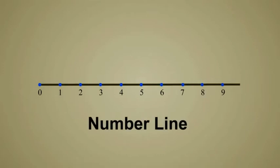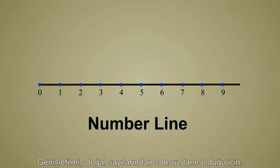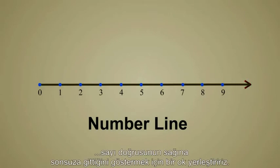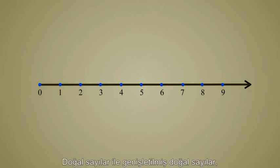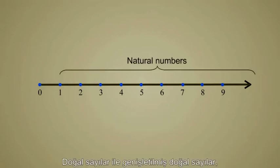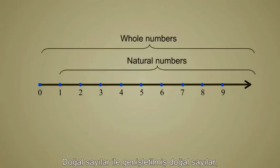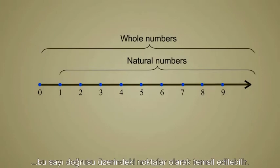Since there are an infinite number of whole numbers, we place an arrow on the right end of the number line to show that it goes on forever in that direction. The natural numbers and the whole numbers both can be represented as points on this number line.